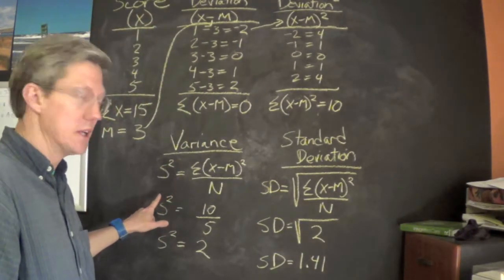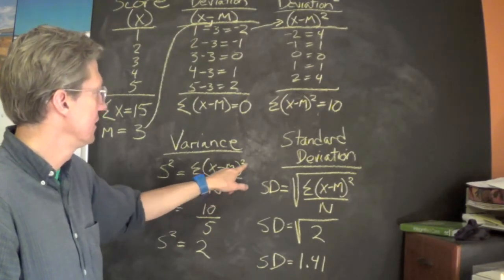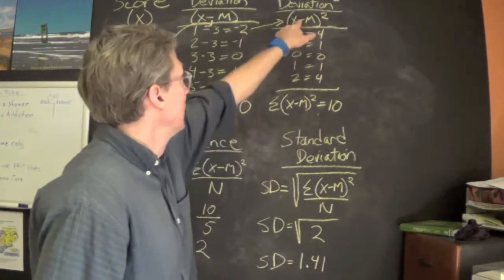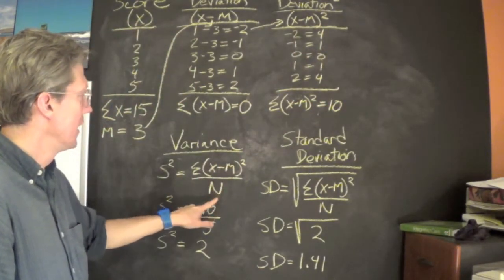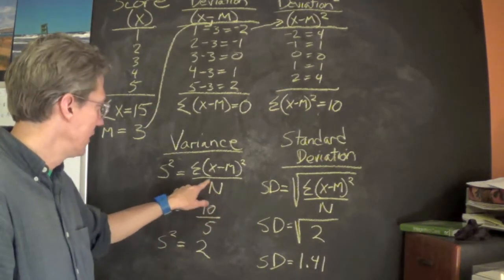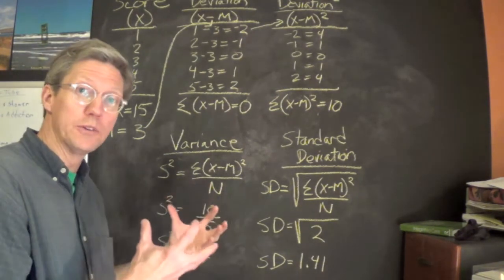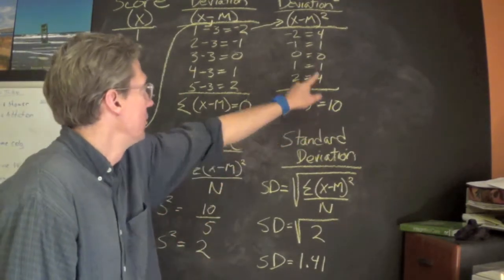The formula is the sum of the score minus the mean squared, which was what we did right here. So we're just taking this and dividing by the sample size. Capital N is always our total sample size, so we take what we got here.